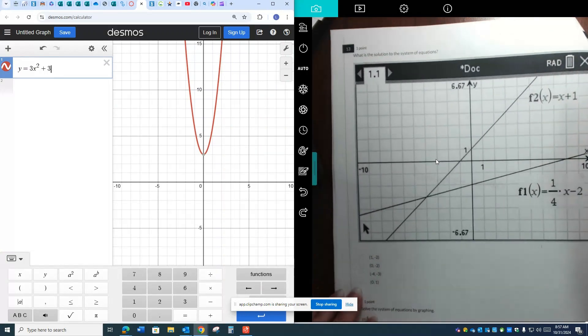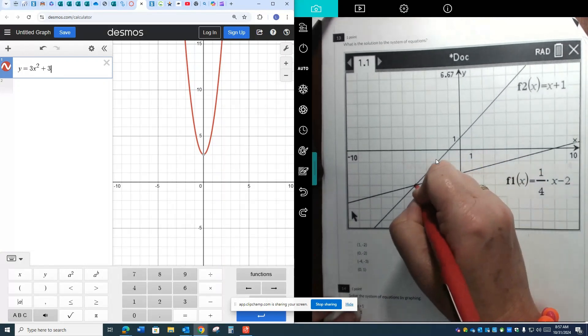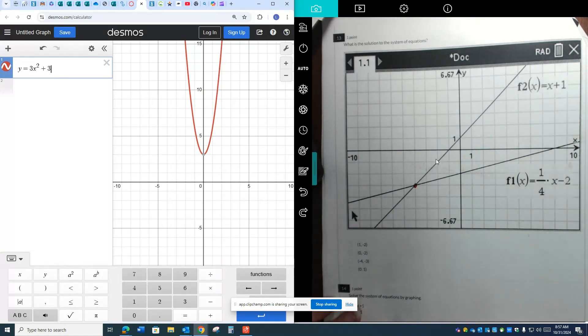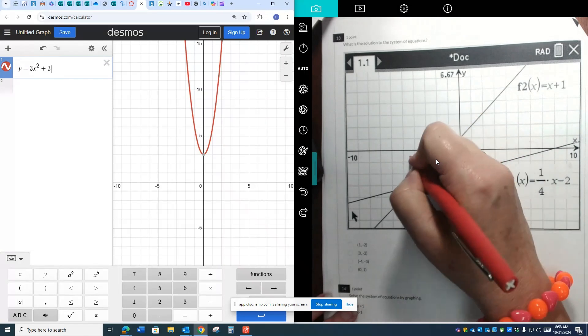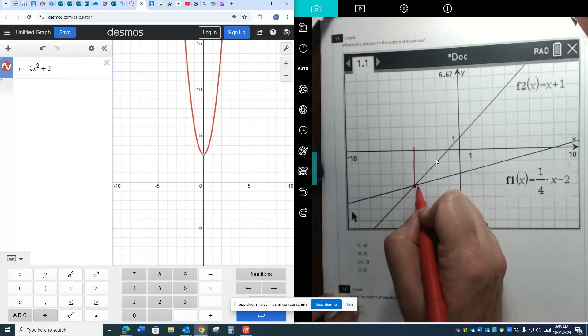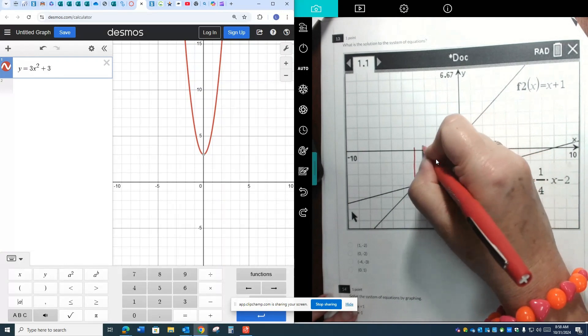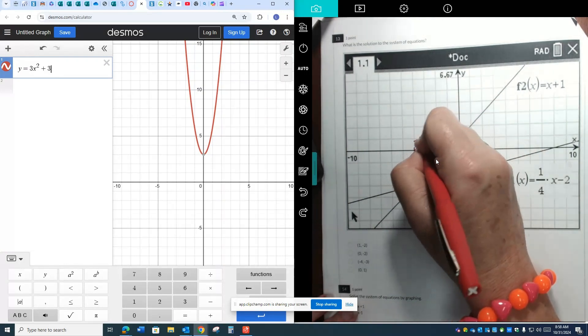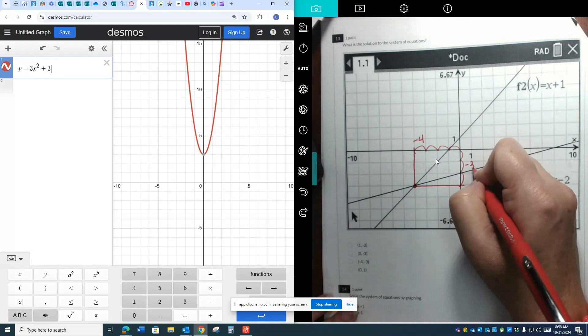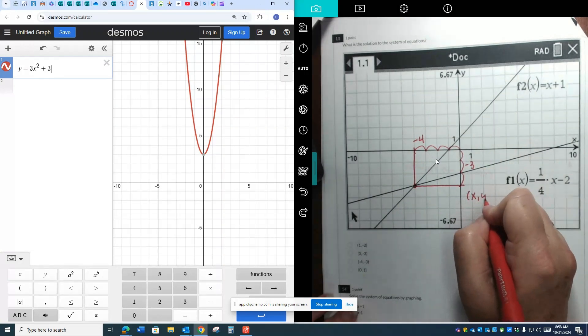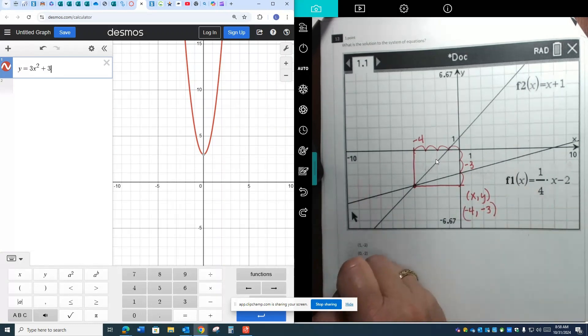Okay. Number 13. What is the solution to the system of equations? There's the solution right there. It's where the two lines intersect. So you could just figure out the coordinates of this point. There's the x value. There's the y value. So my x value is at 1, 2, 3, 4, negative 4. And my y value is at 1, 2, 3, negative 3. So my coordinate pair, x comma y. My x value is negative 4. My y value is negative 3. It's this one right here.